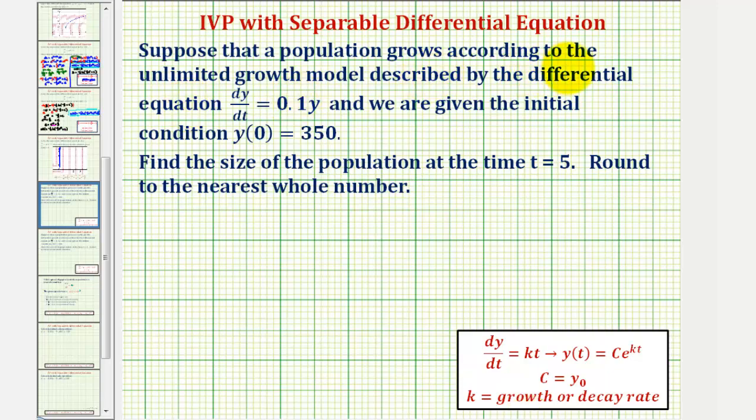Suppose that a population grows according to the unlimited growth model described by the differential equation dy/dt equals 0.1 times y. This is telling us that the change of y with respect to t is equal to a constant times our function y of t. We're also given the initial condition y(0) equals 350. We want to find the size of the population at the time t equals 5